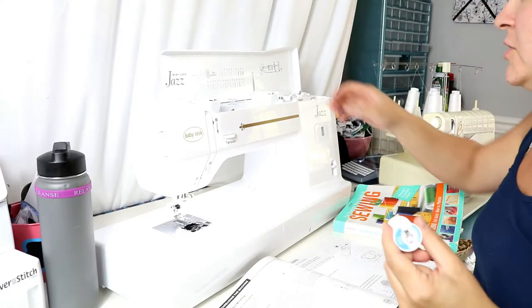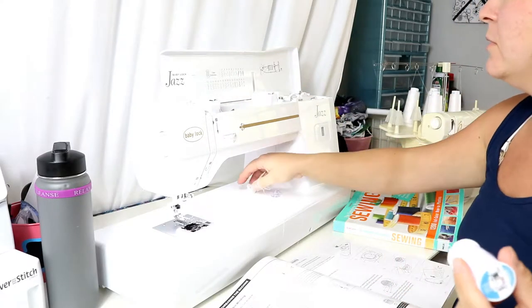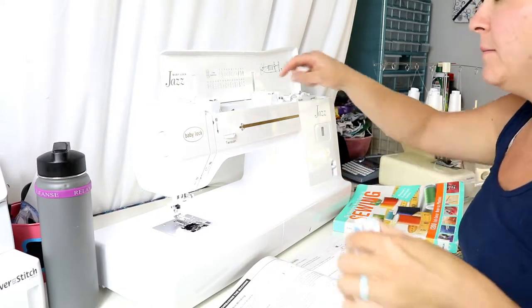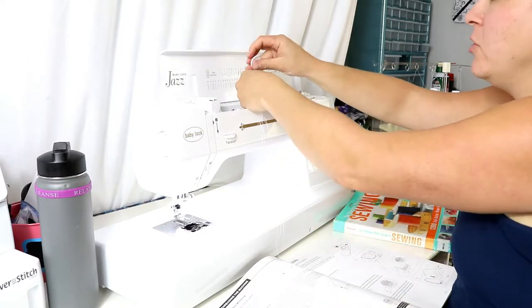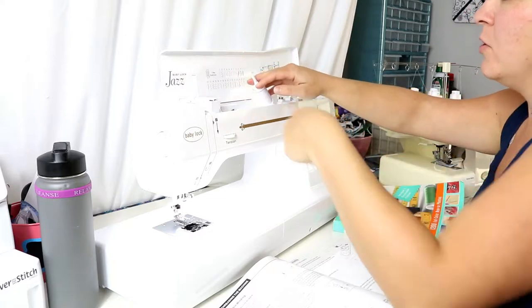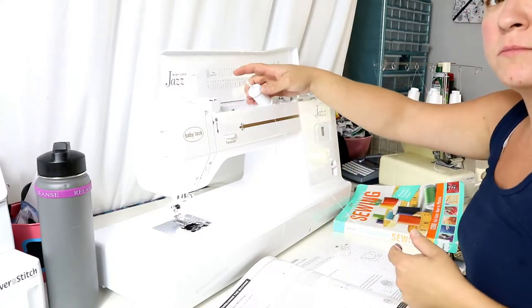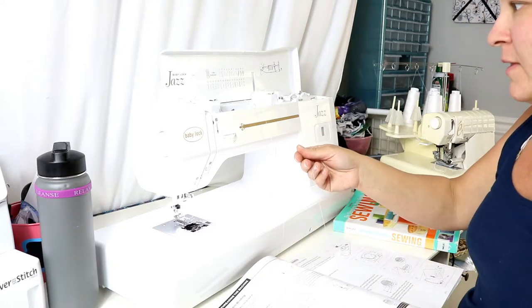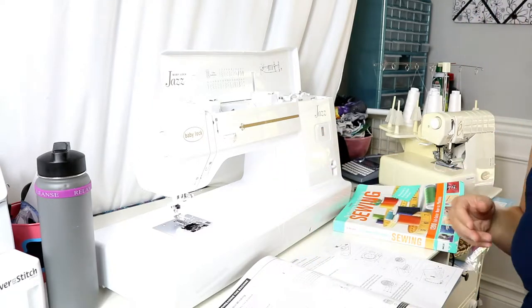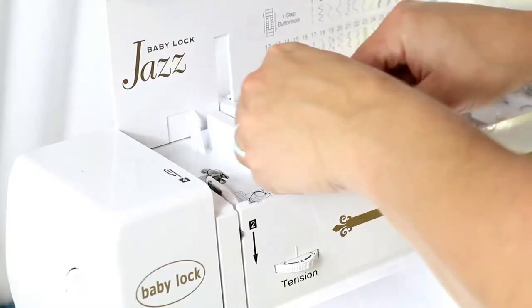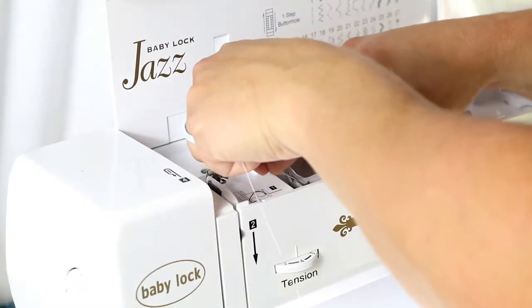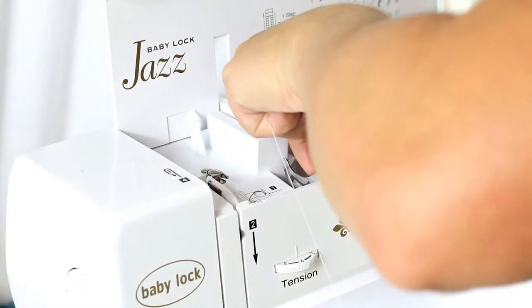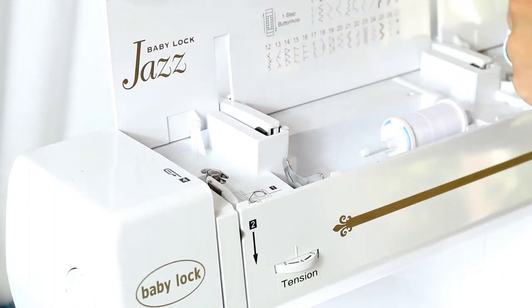So the first thing we're going to do is show you how to thread your bobbin. So you're going to start by putting your thread on the holder. In this case, let's see if I can get a better view. So we're going to start by going through the thread guide and I'll show you a close up in a second.